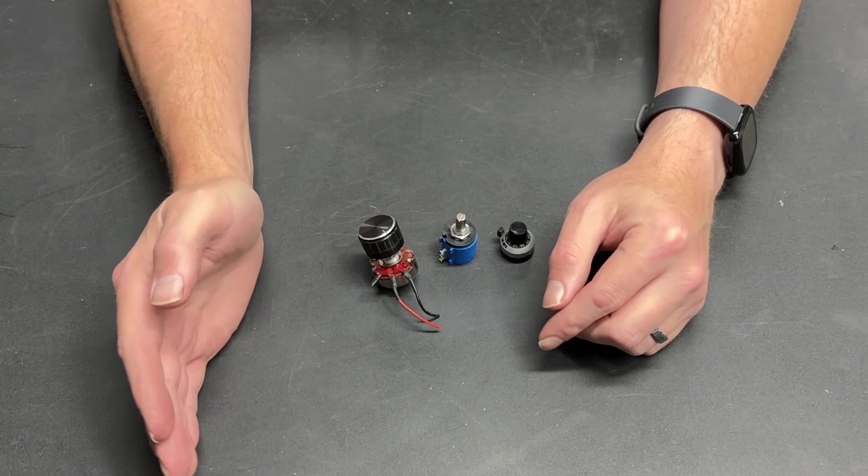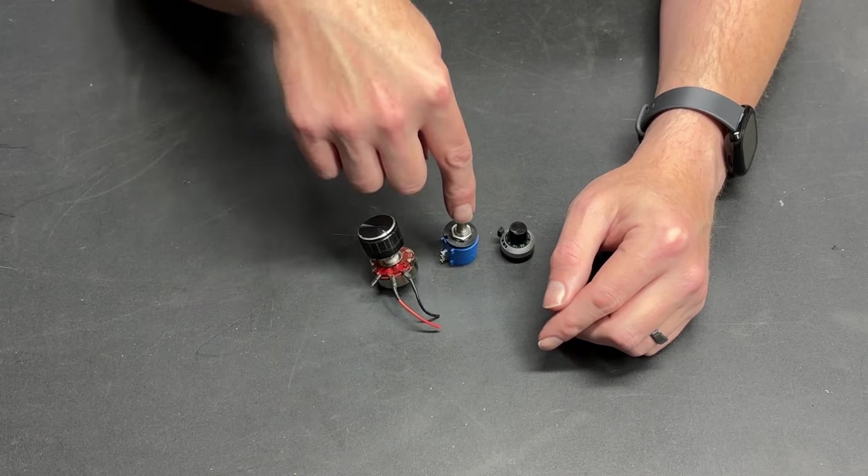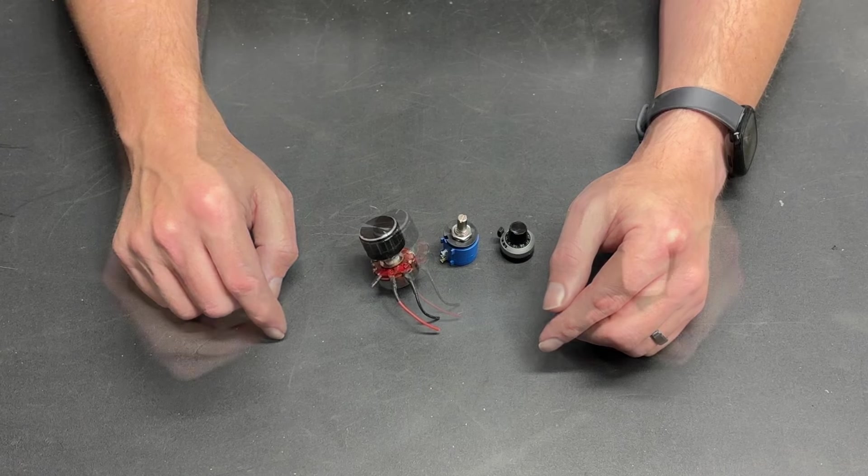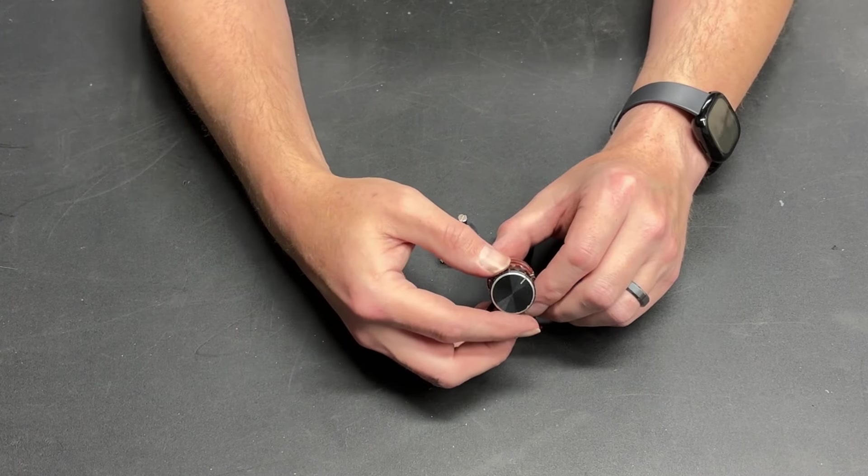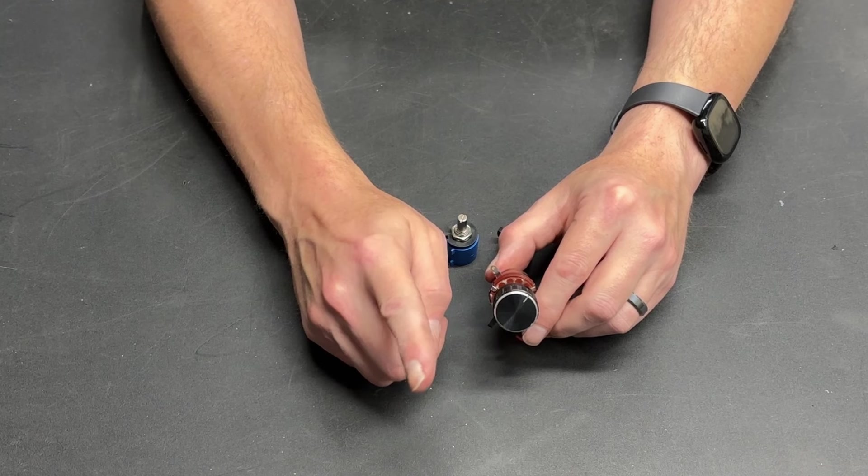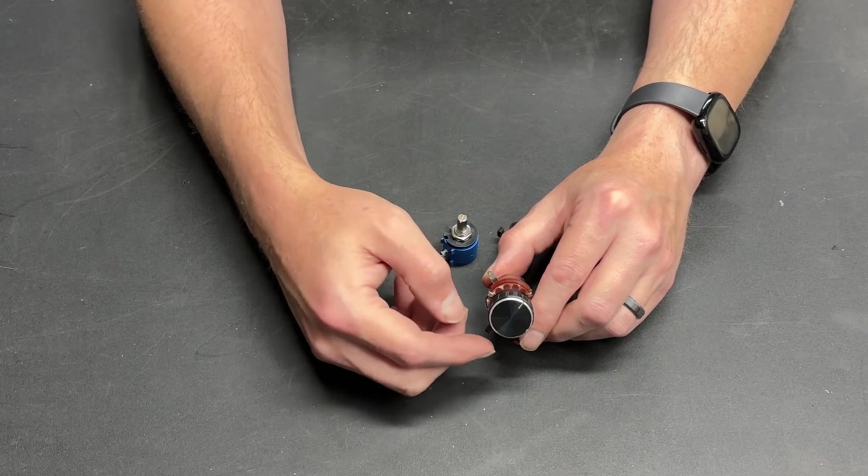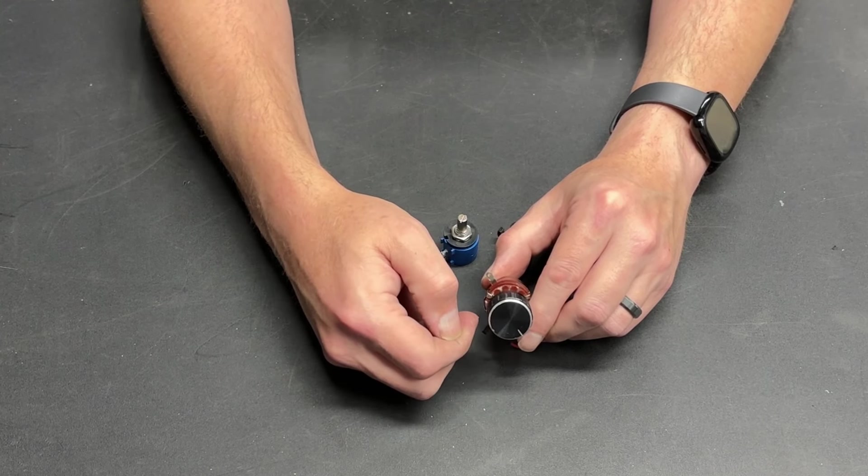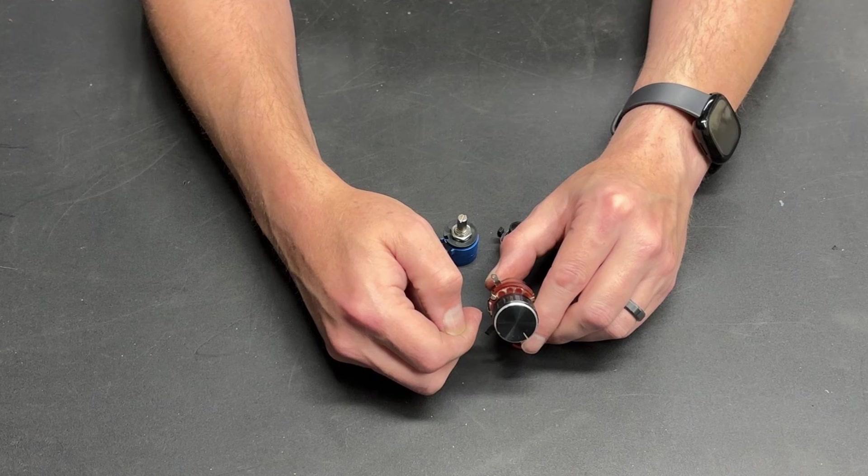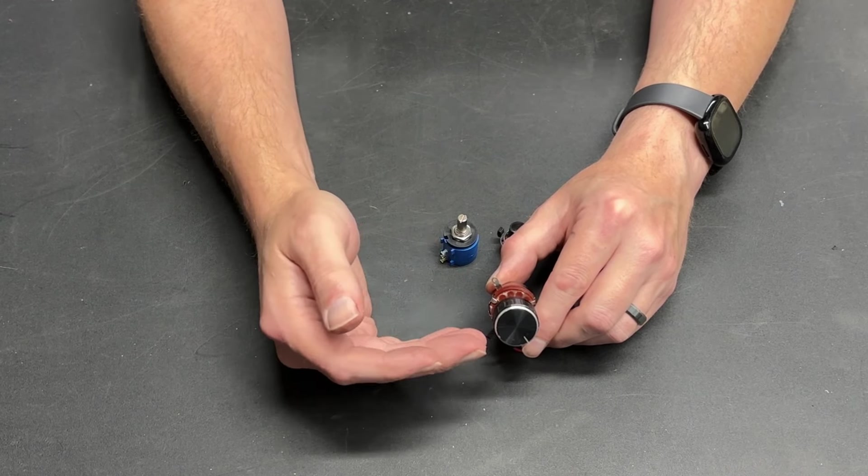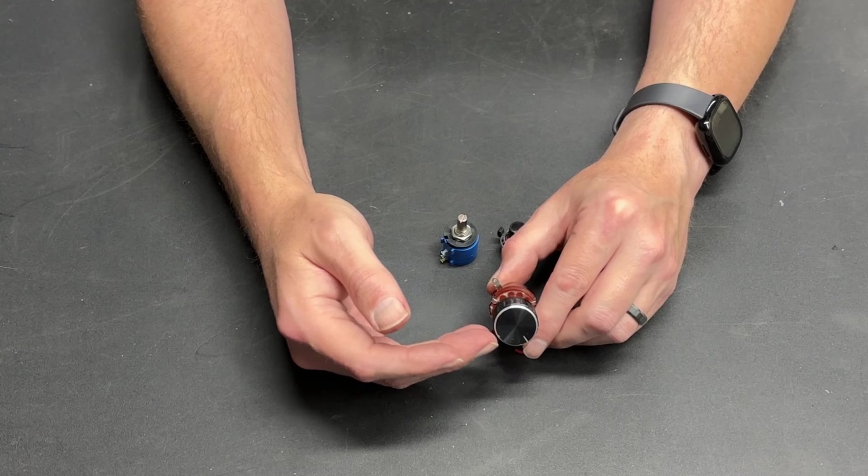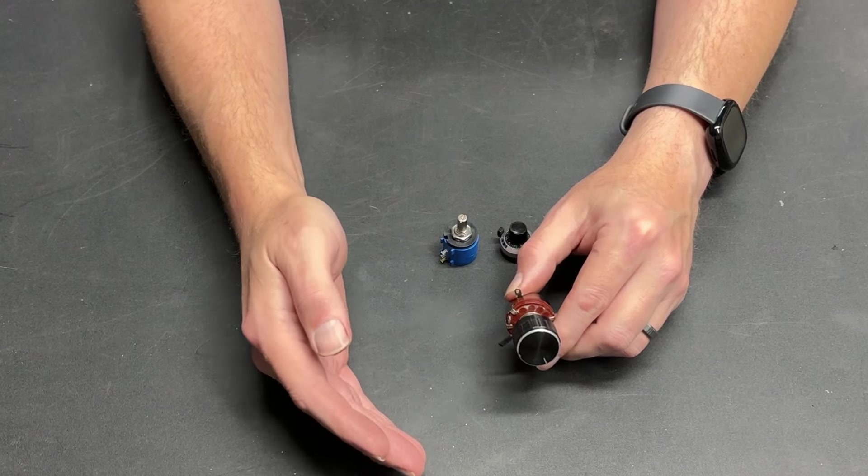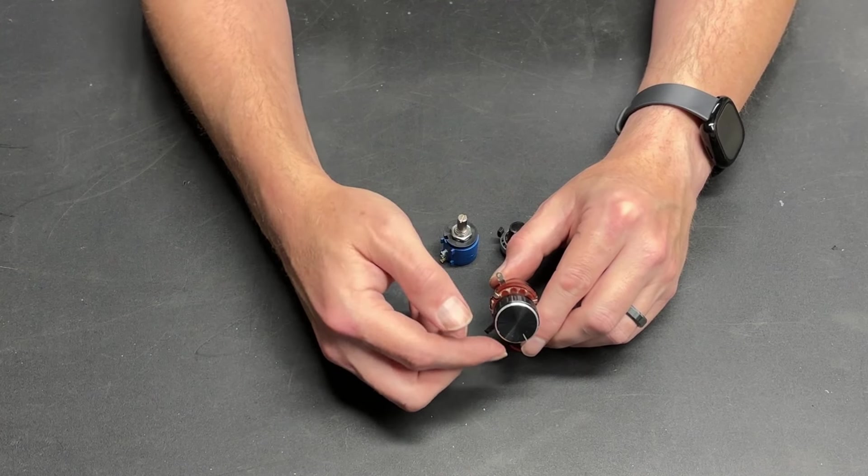But before I get there, let me back up a little bit. What is a 10-turn potentiometer, and how does it compare to a one-turn potentiometer? Well, this is a one-turn potentiometer. And I use the term one very loosely, because if you watch this line over here, if I turn this potentiometer, it doesn't even make a full revolution. So really, it's a three-quarters turn potentiometer.